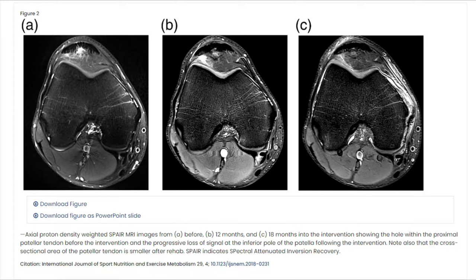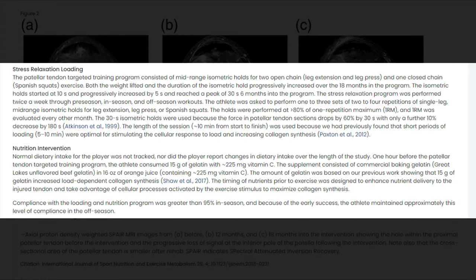We can all really improve our tendon health for performance or just health and longevity in general. This next study shares a lot of details similar to the previous one: exercises kept under 10 minutes in length, primarily isometric movements, and 15 grams of gelatin again for the nutritional intervention. Here they actually put a number on the vitamin C — 225 milligrams — so the protocol is 15 grams of gelatin, 225 milligrams of vitamin C, and isometric loading for rehabilitation.